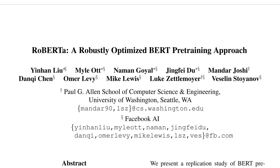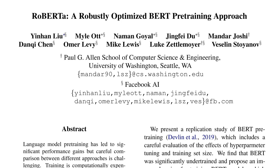Hello everyone, today we're looking at RoBERTa: A Robustly Optimized BERT Pre-Training Approach by Yinhan Liu et al. of mainly Facebook Research. This paper is a pretty short, simple paper. The main premise is that if you get the design choices right, then BERT is able to basically be on par or exceed all of these other methods. So they're essentially exploring design choices in the pre-training and training of BERT.